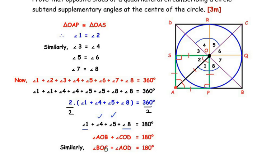To get the second pair of angles, replace angle 1 with angle 2, angle 4 with angle 3, angle 5 with angle 6, and angle 8 with angle 7. Showing this once is sufficient, so we can simply state that similarly these two angles when added together will also give 180 degrees.